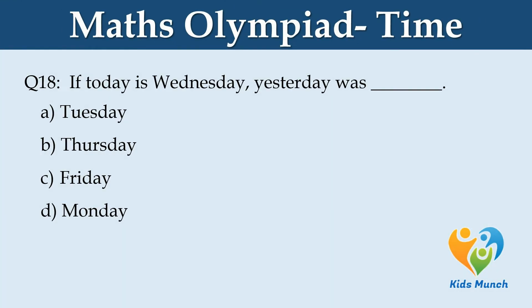If today is Wednesday, yesterday was dash. Option A: Tuesday. Option B: Thursday. Option C: Friday. Option D: Monday.